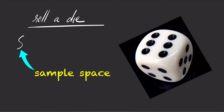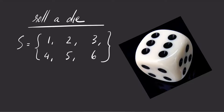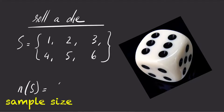When you roll a die, the sample space listing all possible outcomes are 1, 2, 3, 4, 5, or 6. So the number of all possible outcomes for the sample space is 6.